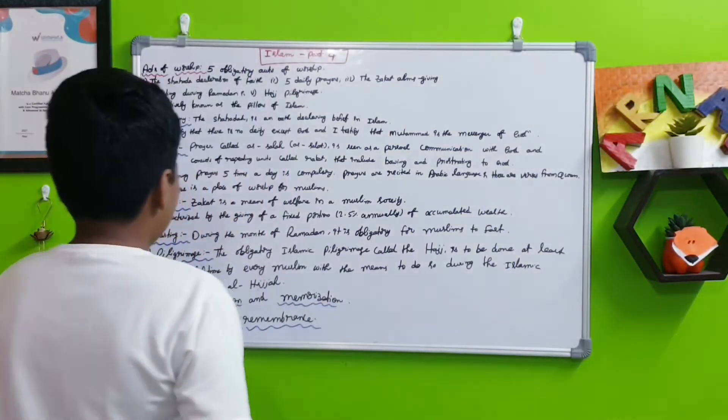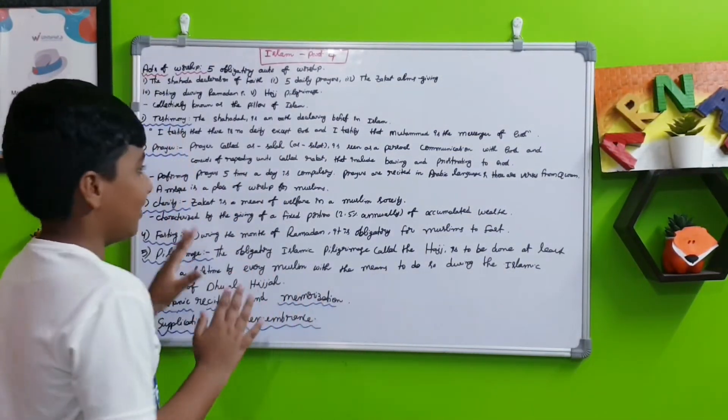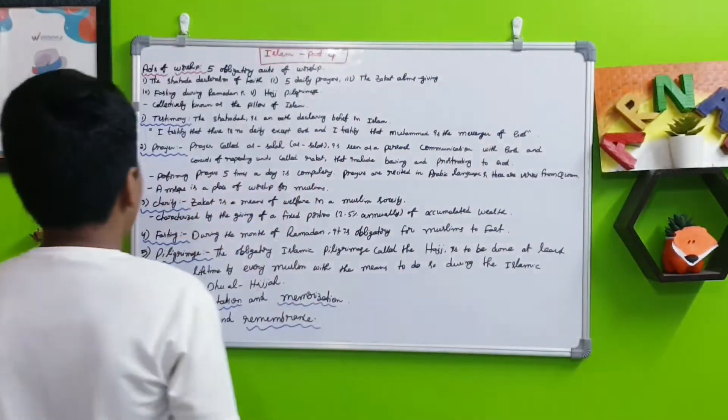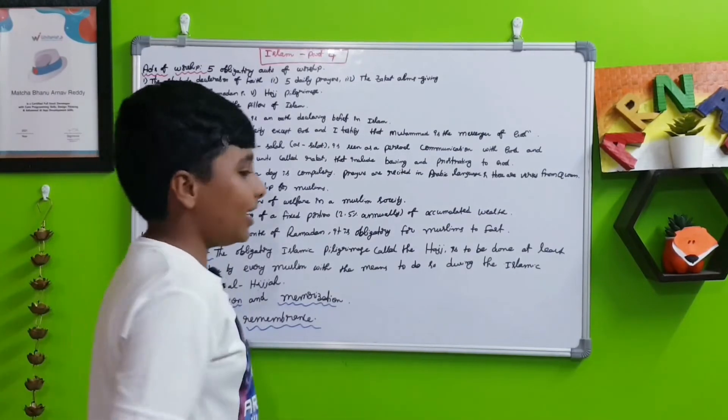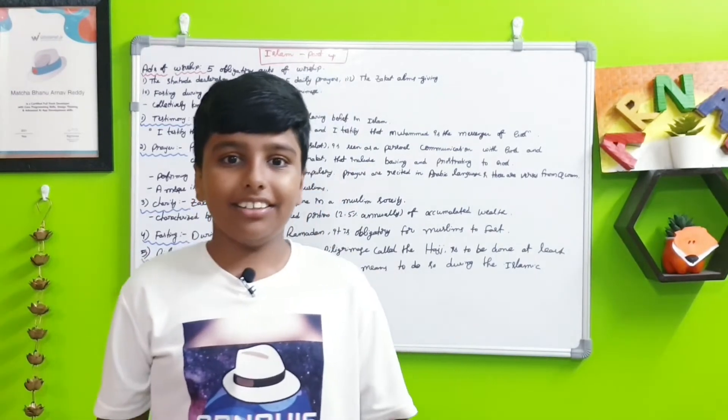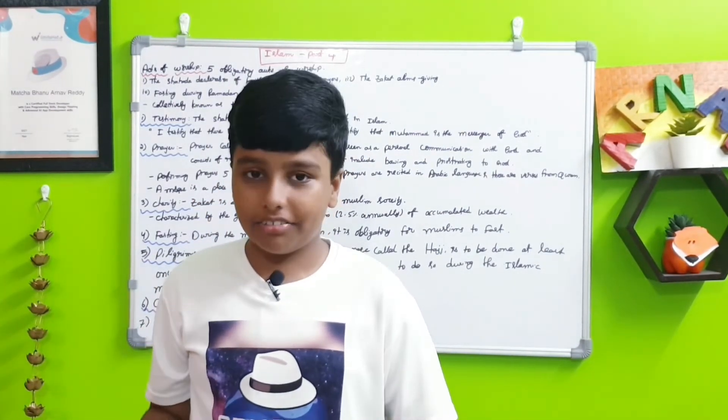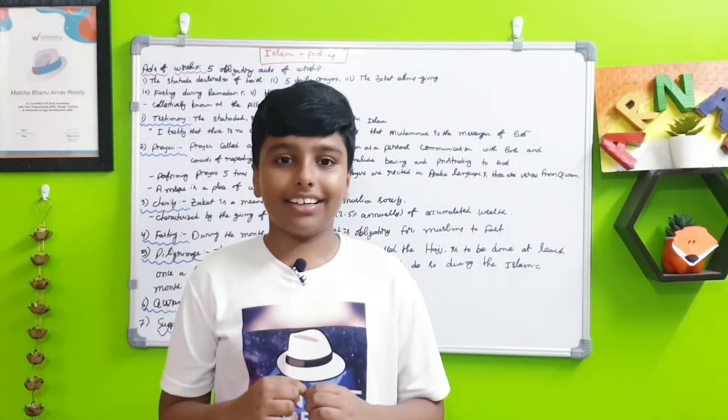These are the five obligatory acts, but we can do two other ones which are also important. The sixth one is Quranic recitation and memorization. Another means of worshiping God is to pray while reciting some part of the Quran or the whole Quran, reciting a whole book from memory.